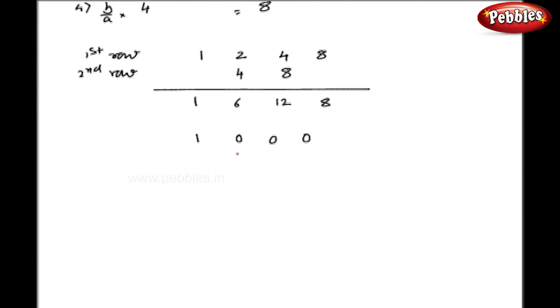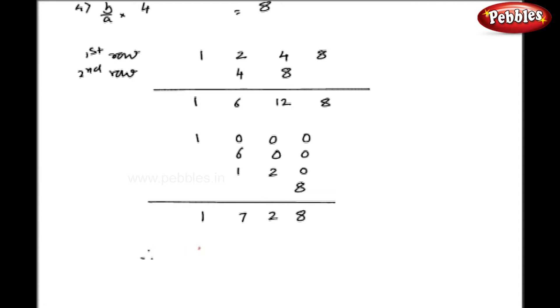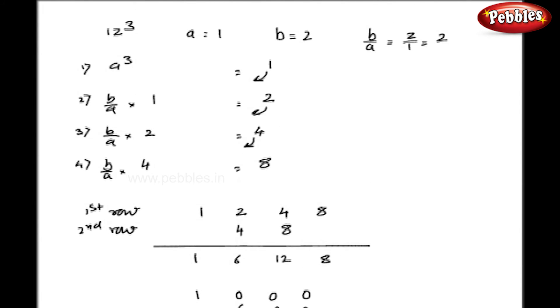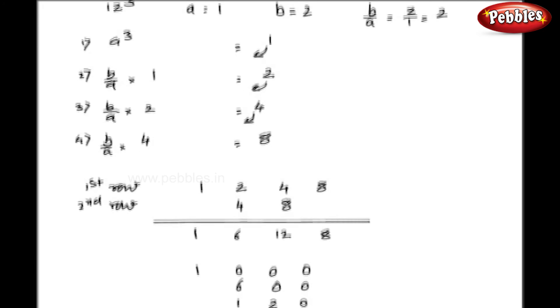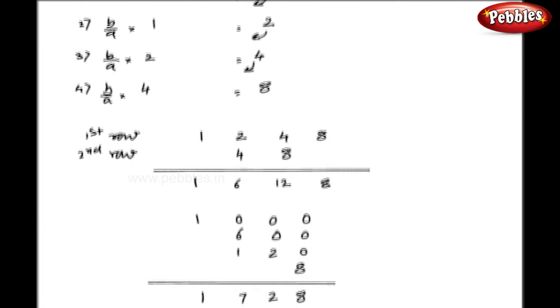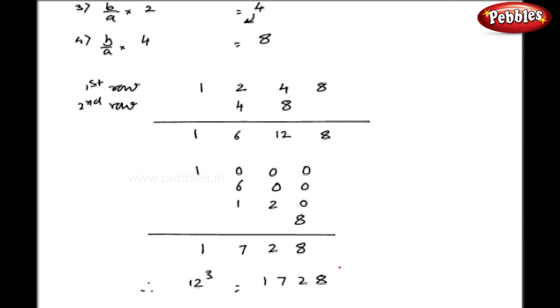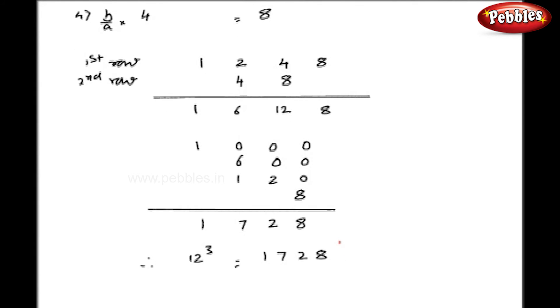Now this is the last step. I will add 3 zeros in front of the first figure, then add accordingly. So my addition gives 8, 2, 7, 1 — that is my answer. So 12 cube is equal to 1728. Just go through the calculations once again: first 4 calculations, then 2 rows, then simply add 3, 2, 1, and no zeros in front of the figures, and add them traditionally.